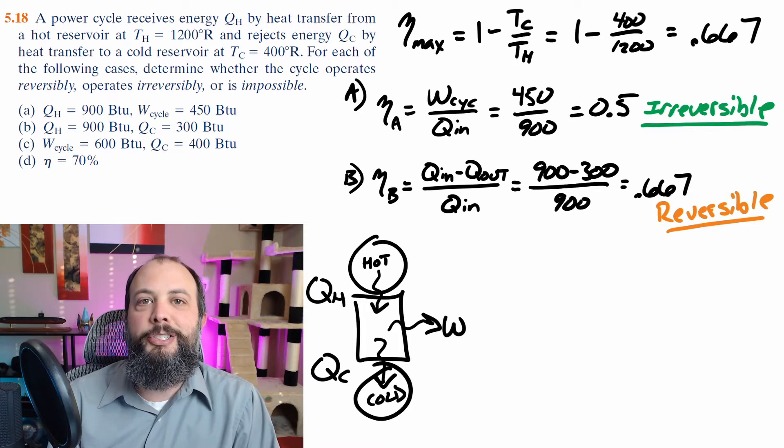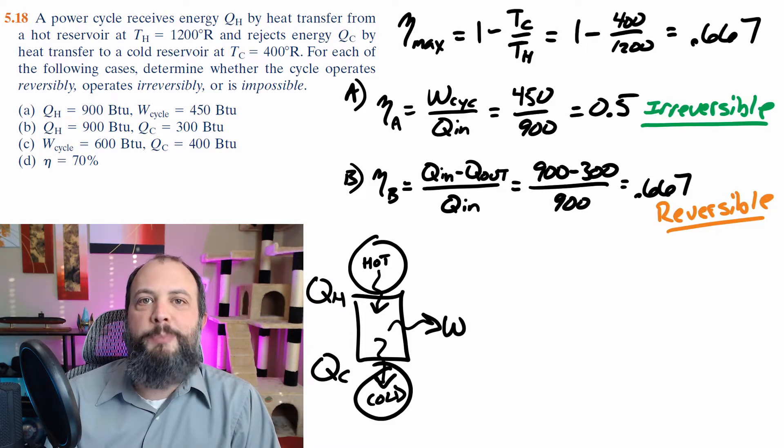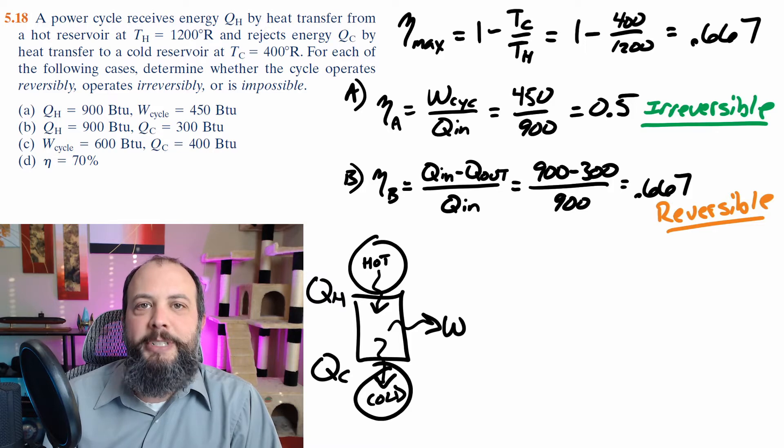This system could only operate at this efficiency if there are no irreversibilities present in the system, which means that it's not practical in the real world, but it doesn't violate the second law of thermodynamics.